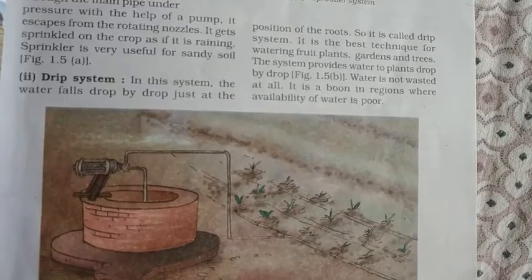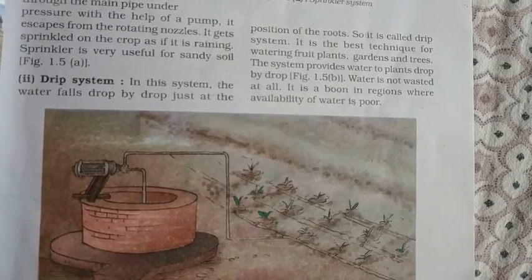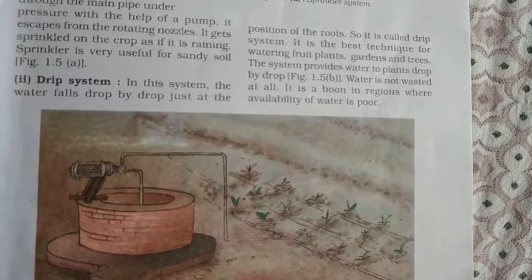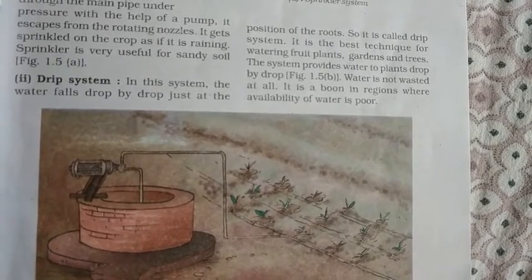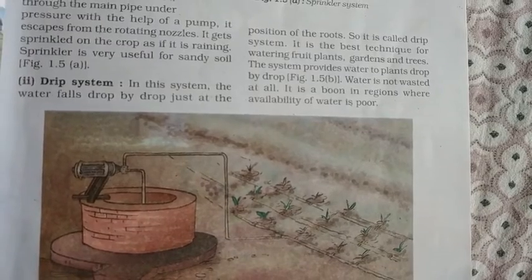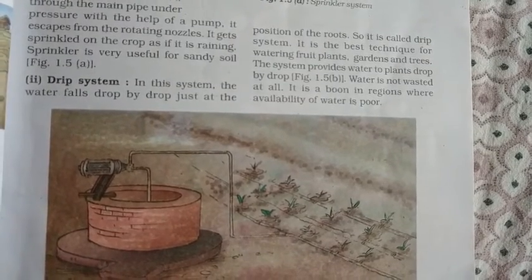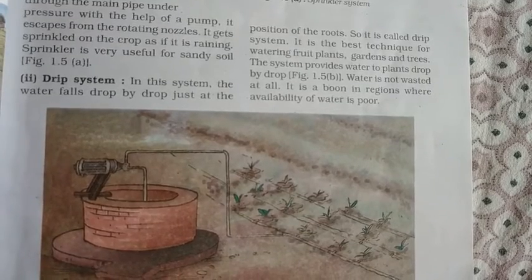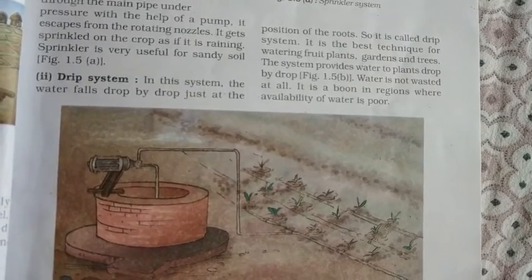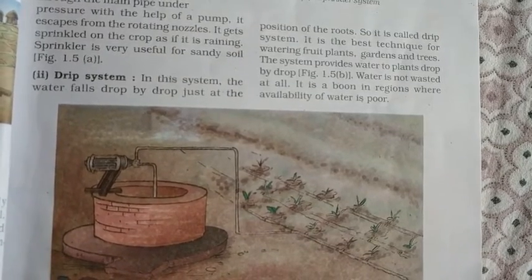Drip irrigation is the best technique for watering fruit plants, garden plants, and flowering plants. The system provides water to plants drop by drop and water is not wasted at all. It is a boon in regions where the availability of water is very less or poor, as farmers can still get a proper yield with minimal water availability.